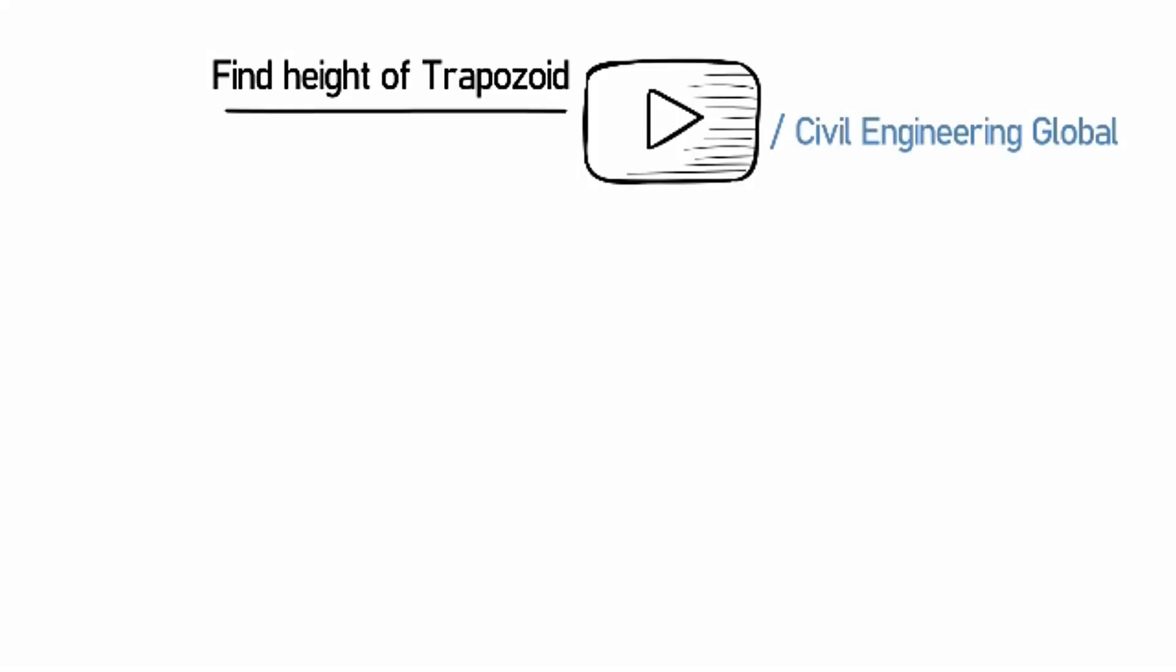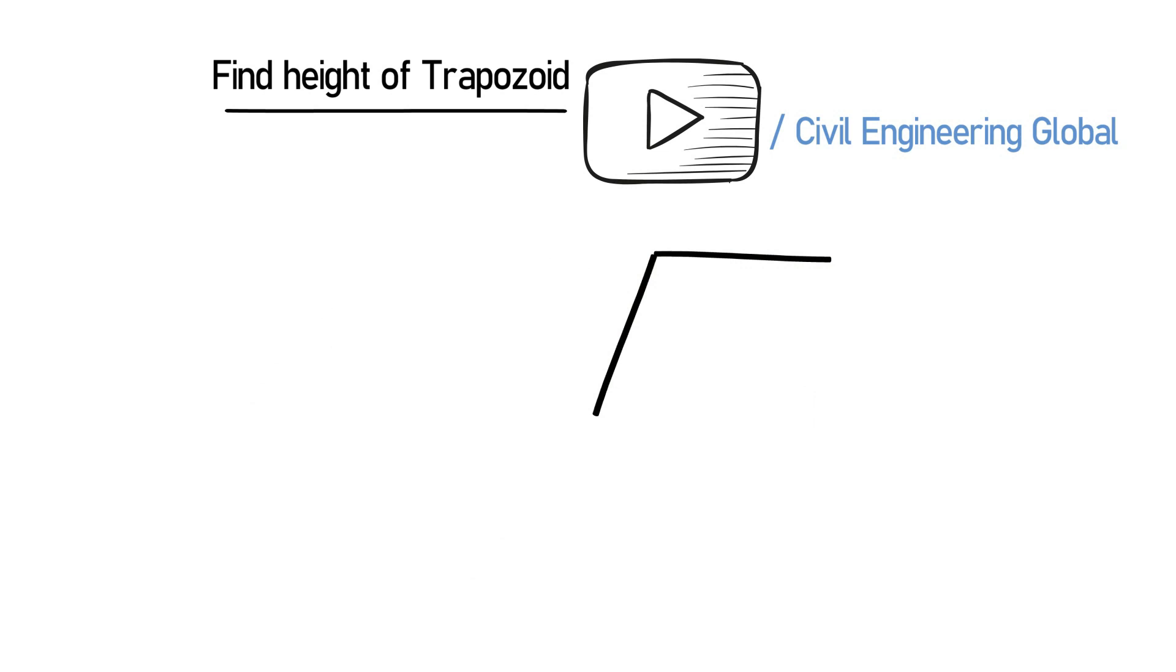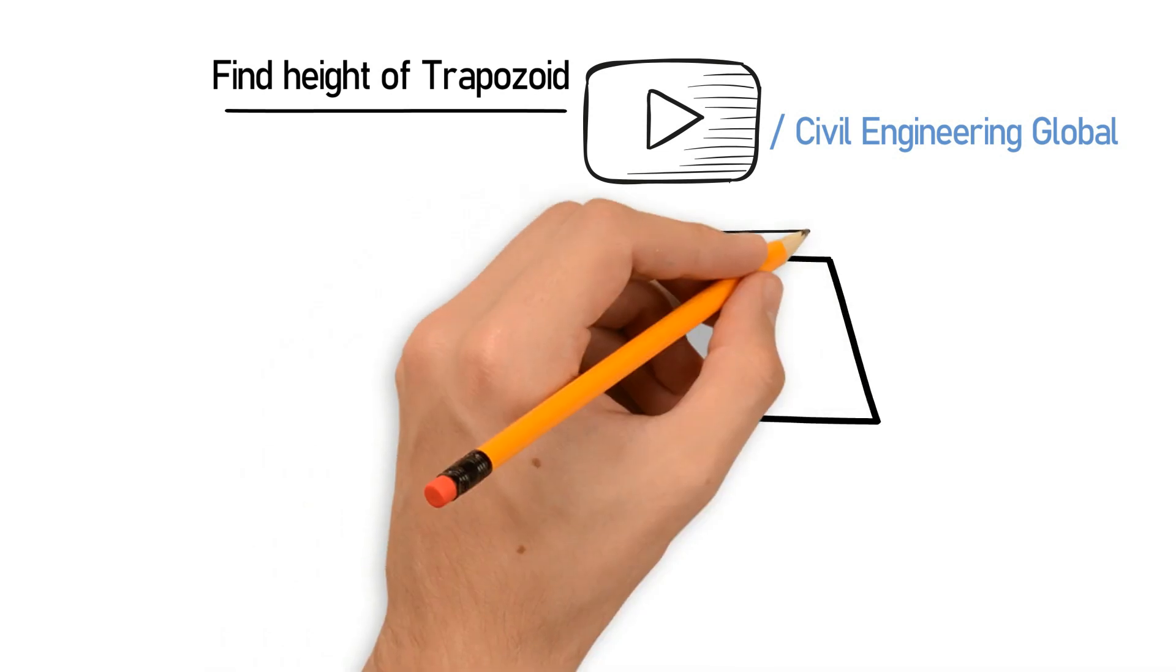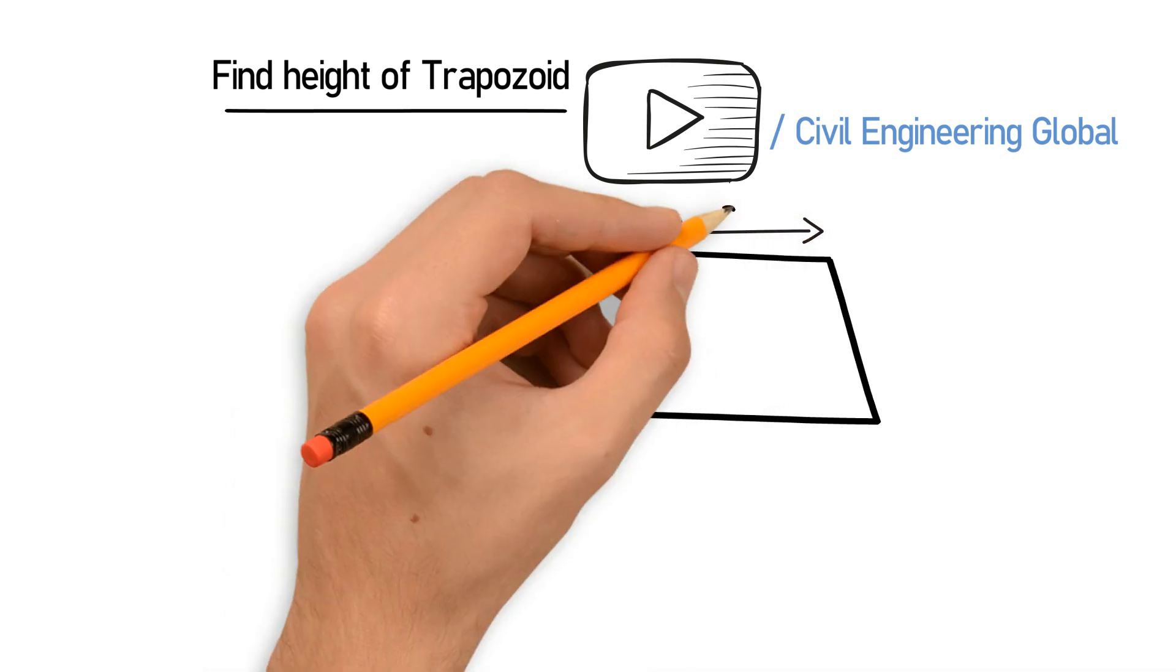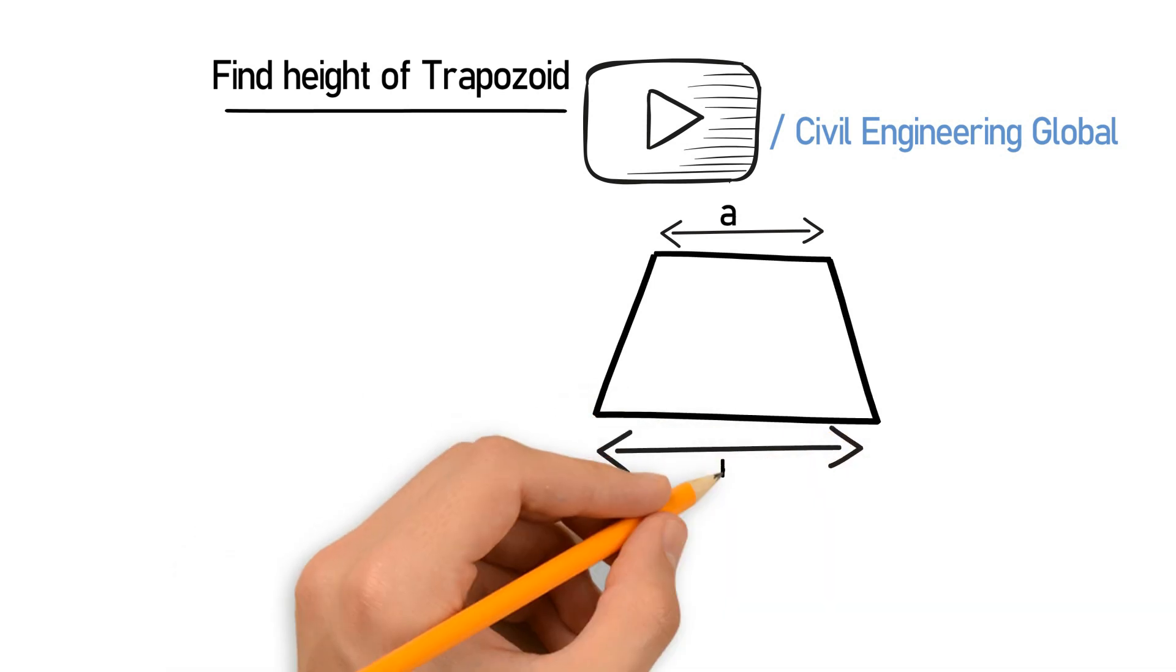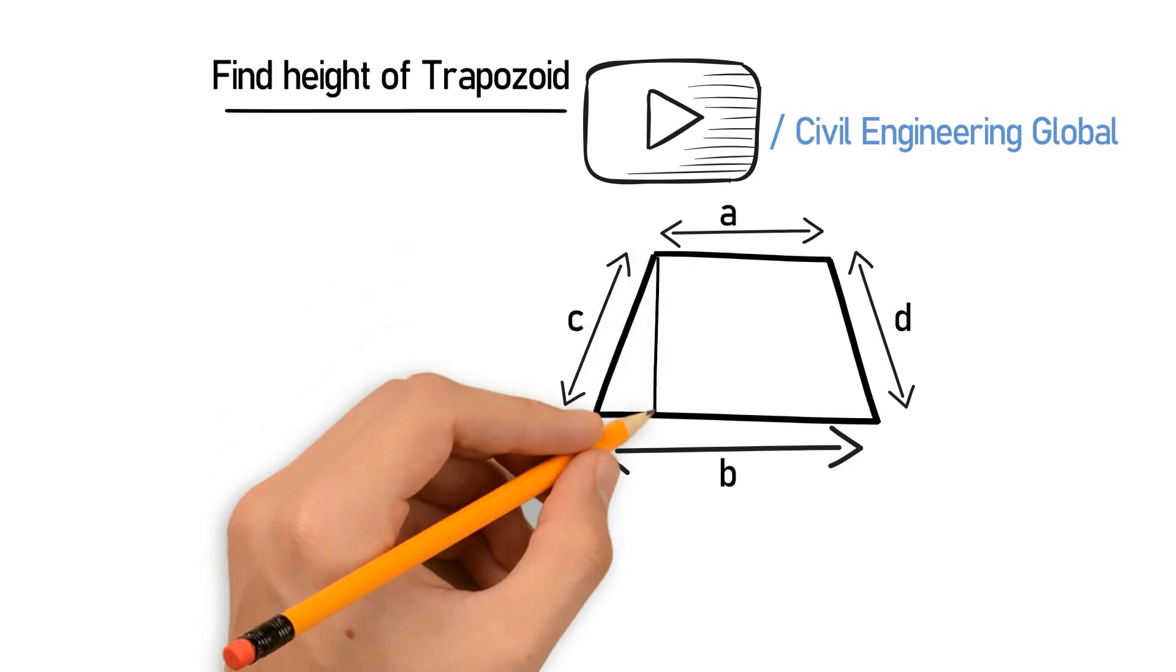So let's draw the trapezoid first. This portion is a, this portion is the base b, and this portion is the base c, and this portion is d. So this line represents the height h.